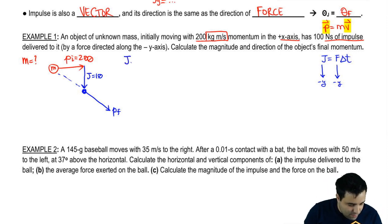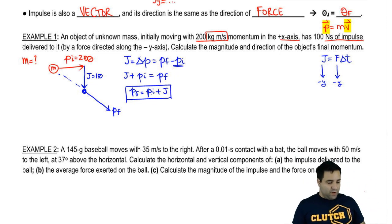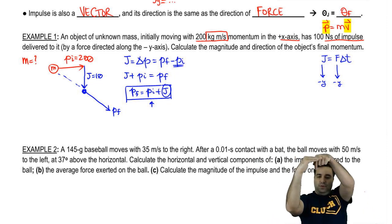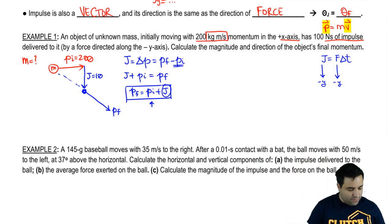The idea here is that J is the change in P. I can expand this: PF minus PI. If I move stuff around, J plus PI equals PF. I want to rewrite this: PF equals PI plus J. Your final momentum is whatever your initial momentum was plus J. J is the change in momentum. You're going this way, I pushed you this way, so you're going to do this now. We want to know the magnitude and direction of the object's final momentum.